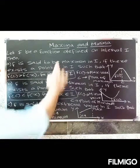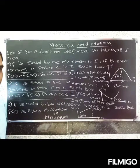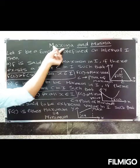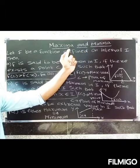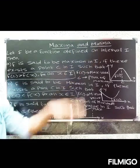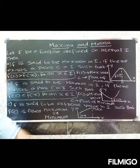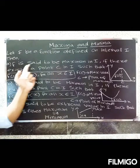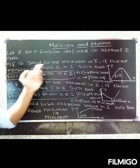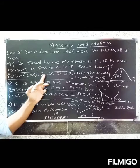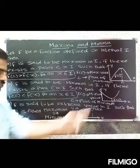Welcome. Today the topic is maxima and minima — introduction and background. So, definition: let f be a function defined on interval I. f is said to be maximum on interval I if there exists a point c in I such that f of c is greater than f of x for all x belonging to I.